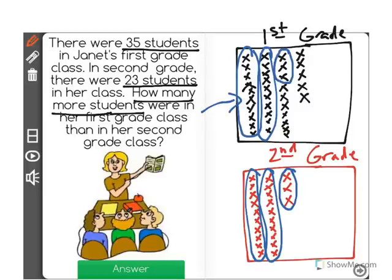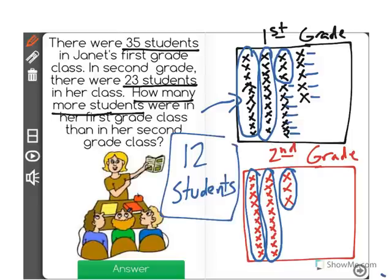Now, let's compare to see how many more X's there are in the first grade. 1, 2, 3, 4, 5, 6, 7, 8, 9, 10, 11, 12. There were 12 more students in the first grade class than in the second grade class.